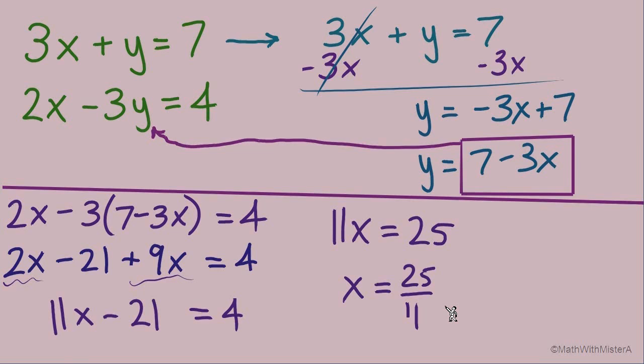Now let's wrap up getting the y value. We need to put 25 over 11 in place of this x right here. So y equals 7 minus 3 times x, 25 over 11. Careful order of operations, so let's do the multiply, negative 3 times the 25 in the numerator. That takes us to y equals 7 minus 75 over 11.